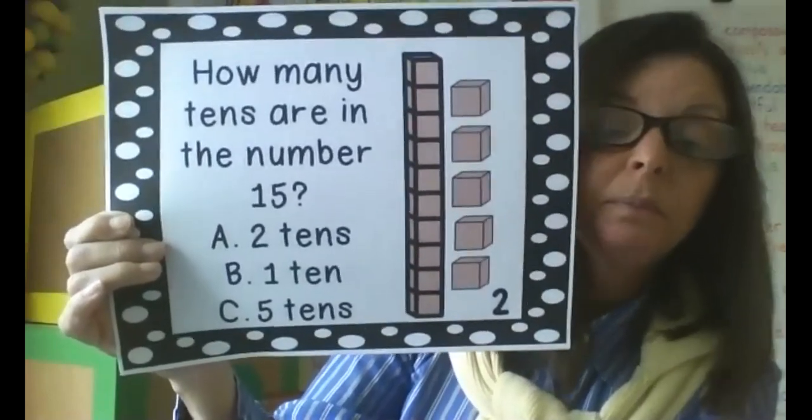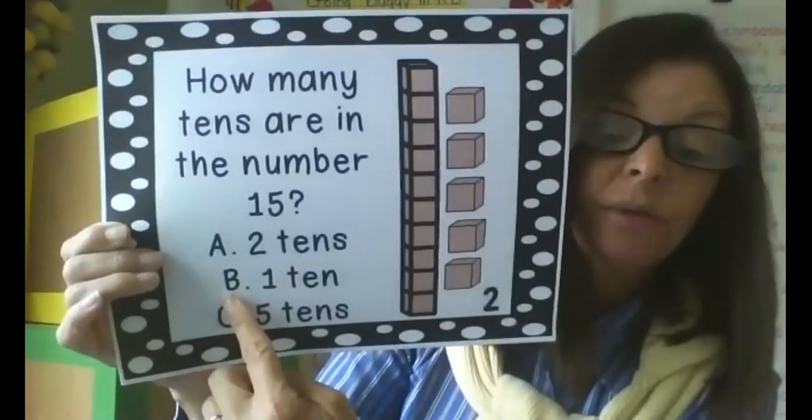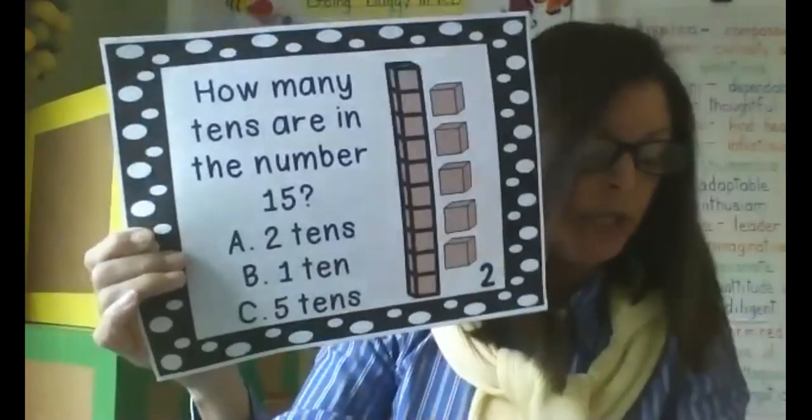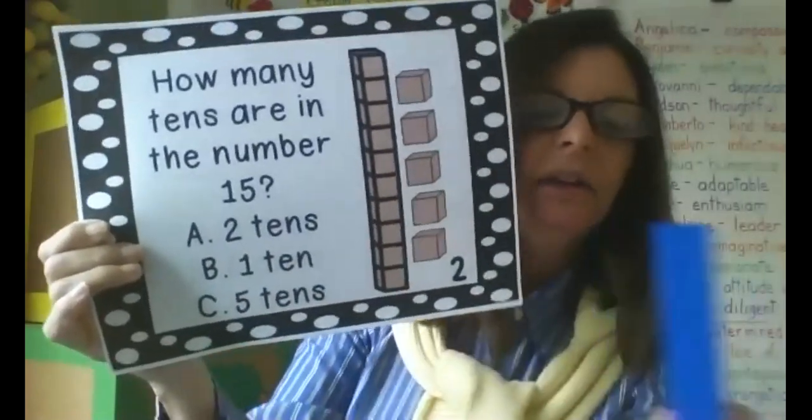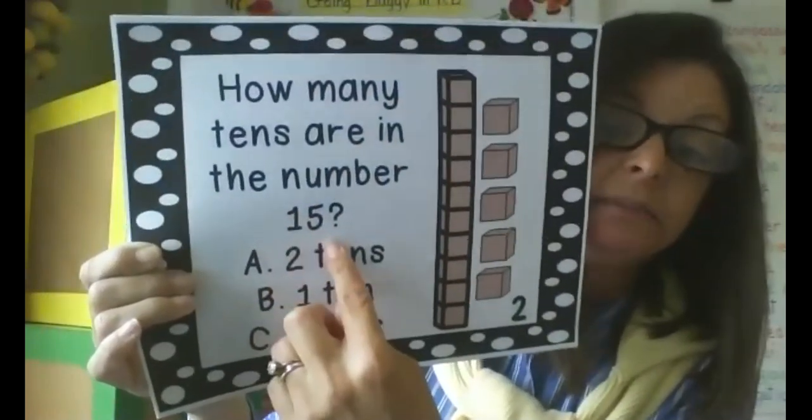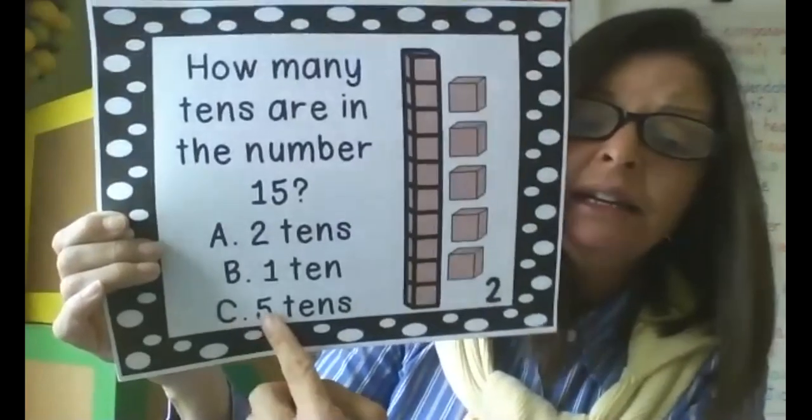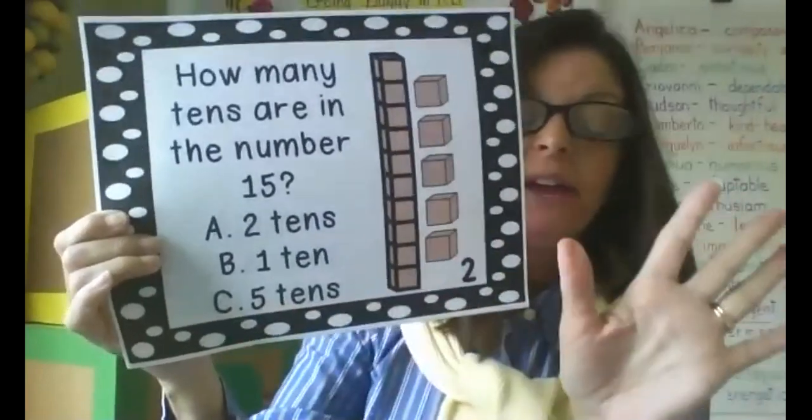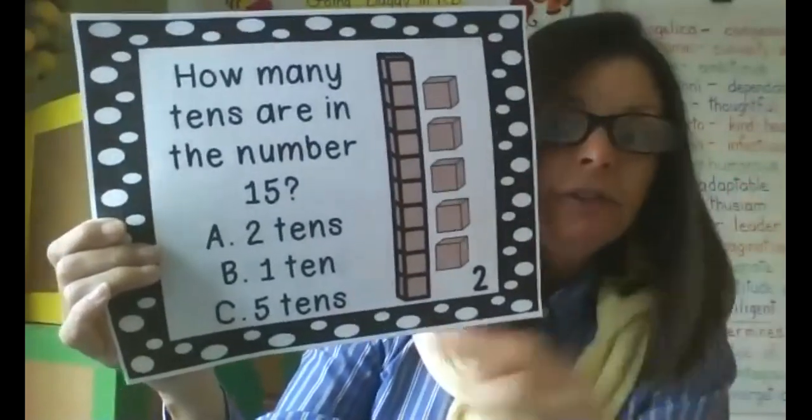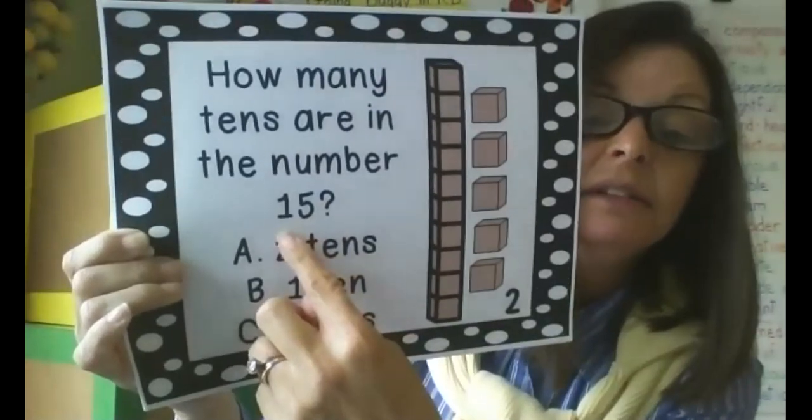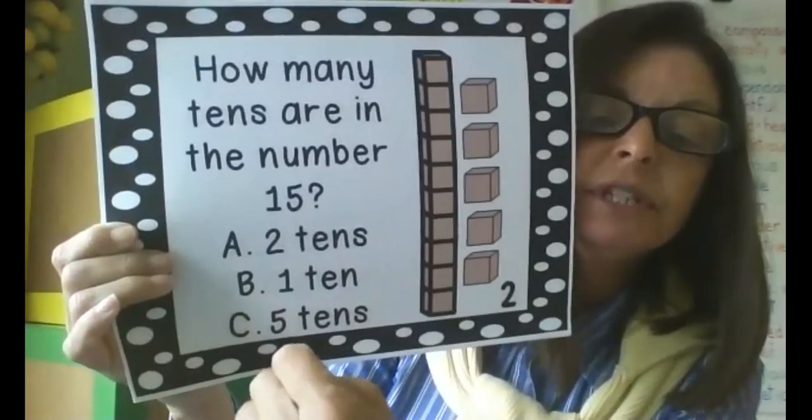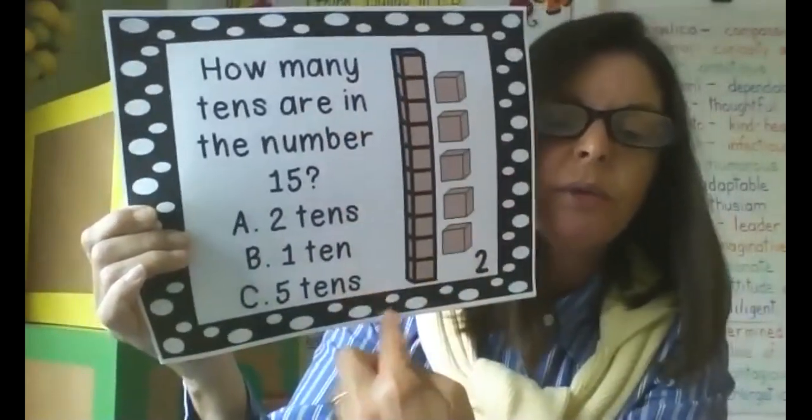So if your answer was B, you're correct because it was one 10. It can't be two tens because we know that if we have two tens, that's going to be 20 and that's going to be too big for the number 15. If you answered C, it can't be five tens because what's five tens? 10, 20, 30, 40, 50. It's 50. 50 is way too big for 15. So the answer is going to be B. How many tens are in the number 15? One 10. There's one rod.